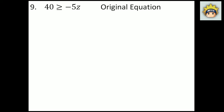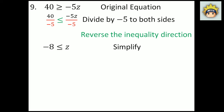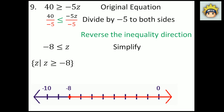Number 9. The original equation is 40 is greater than negative 5z. Divide by negative 5 from both sides because that is the inverse property. Each time I divide by a negative value, I have to flip the direction of the inequality. So the greater than symbol flips to a less than symbol. 40 divided by negative 5 is negative 8, which is less than z after simplifying. In set builder notation: z, z is greater than negative 8. It is a closed dot on negative 8 going all the way to the right — so negative 7, negative 6, negative 5 and so forth would make this valid.